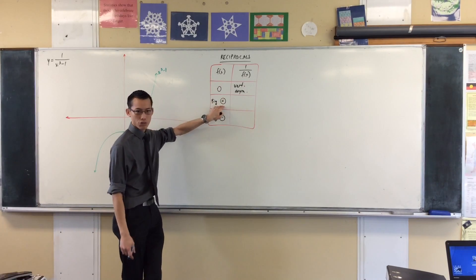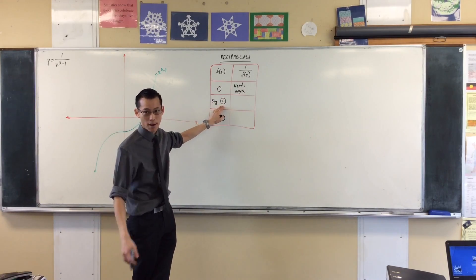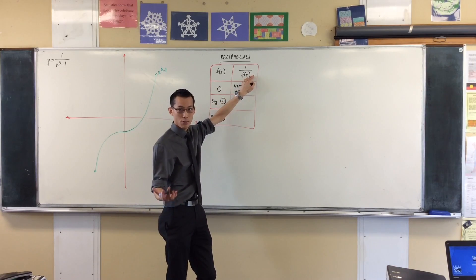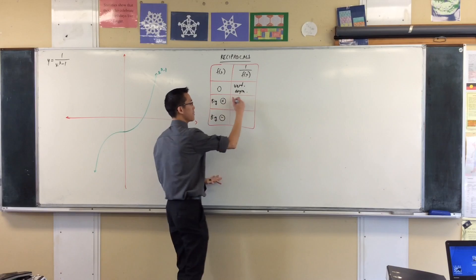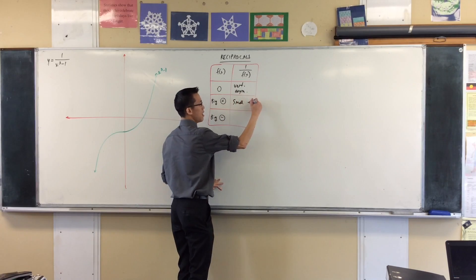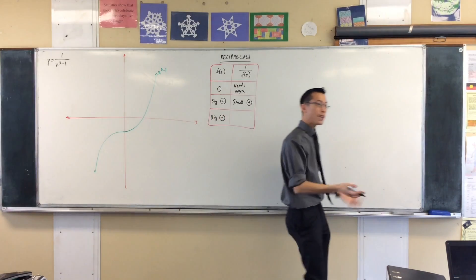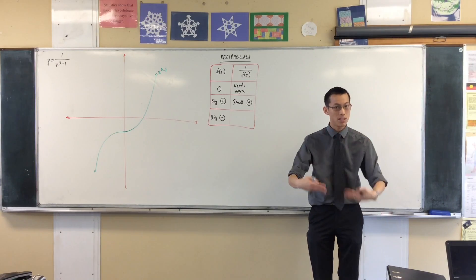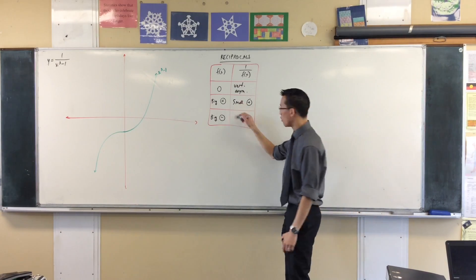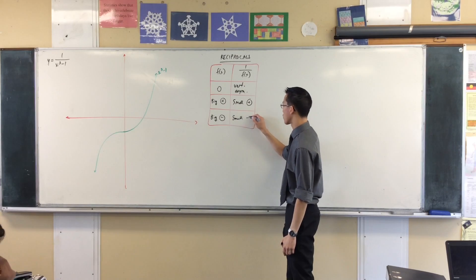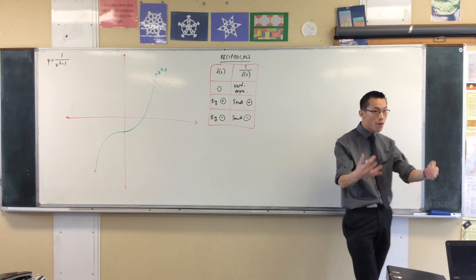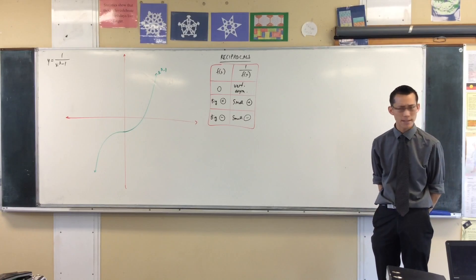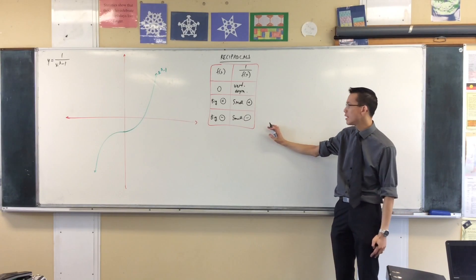If the function is huge — some astronomically large number — then when you take the reciprocal of a really astronomically large number, the reciprocal should be really small, but it'll still be positive. If you think about a really really negative number, like negative a million, when you take the reciprocal it's still small but the sign comes for the ride — one over negative a million is a small negative number. This is all you need to get a really good picture.